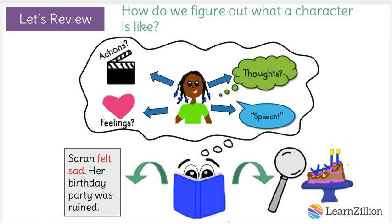For example, if we read that a character's eyes filled up with tears when she saw her squished birthday cake, we could figure out she's probably very sad, even though the author didn't directly tell us.